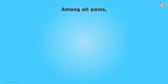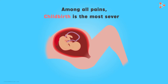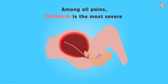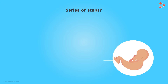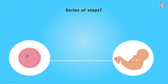Among all kinds of pain that a human goes through, childbirth is generally considered to be the most severe. The pain that a female goes through is unbearable, and we have all given our mothers that intense pain while coming into this world. But have you ever wondered about how you got this life? What were the series of steps that made you grow into this structure from being a single cell? Let's have a look at this most important process that helped us gain life.